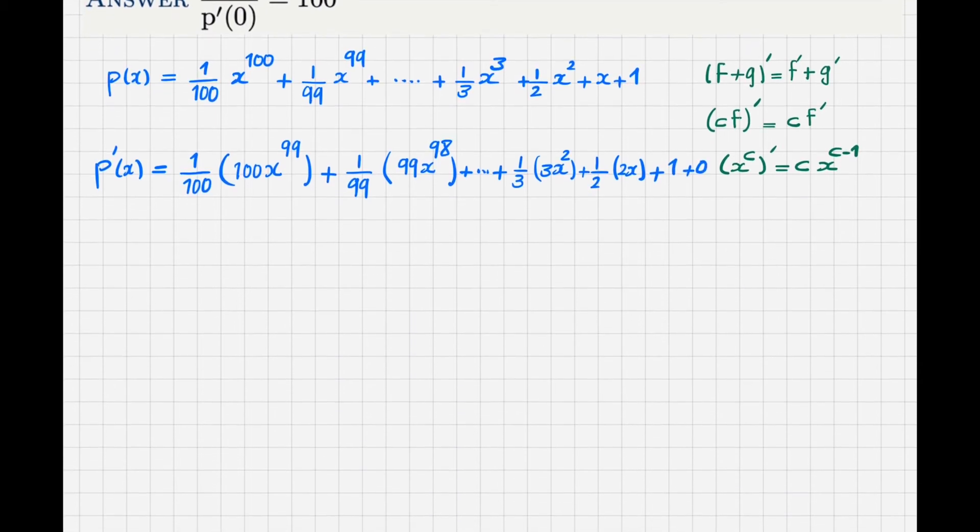But I can now simplify my derivative. You see, this 100 and this 100 in the denominator cancel out. This one cancels out and then this process will continue. The cancellation will continue. So what is left for me is x to the 99. The next one would be x to the 98. And then it continues up to this term: 3 and 3 cancel, I will be left with x squared. The next term, the 1 over 2 and 2 cancel, I will be left with x. And finally, I will have 1.